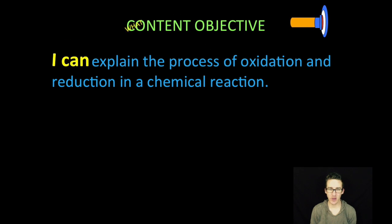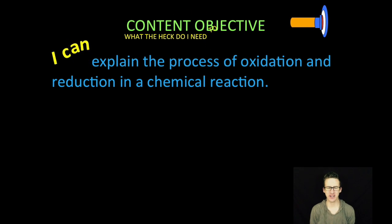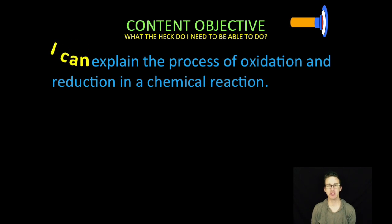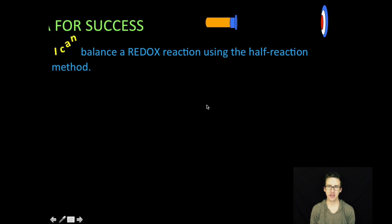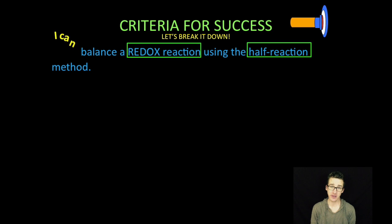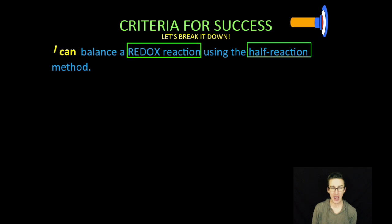Hey, what is up chemistry people? It is Mr. Boylan, and what in the heck are we going to do in this video? We are going to explain the process of oxidation and reduction in a chemical reaction. That sounds kind of familiar to the last content objective. We're going to break it down a little bit differently here. We're going to talk about how we balance a redox reaction using the half reaction method.